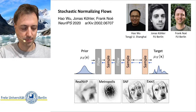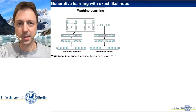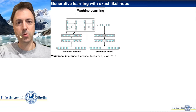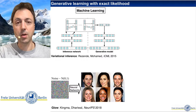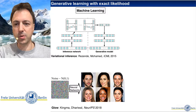Generative learning methods with exact likelihood, such as normalizing flows, are quite popular in machine learning. For example, they can be used to transform the latent space distribution in variational autoencoders, or to transform samples from a simple noise distribution into samples from images that we are interested in, as in the Glow paper.